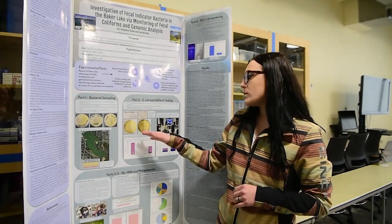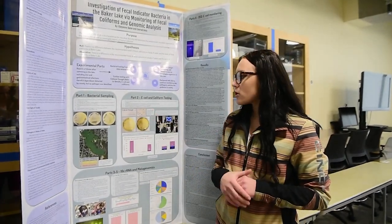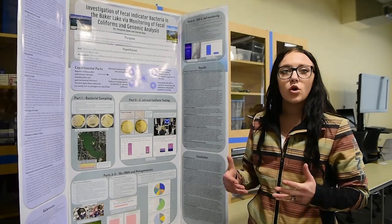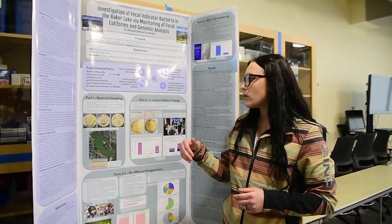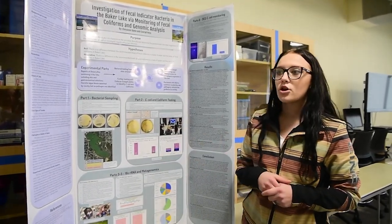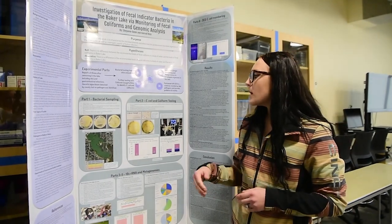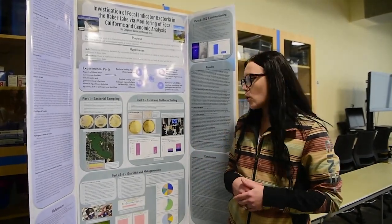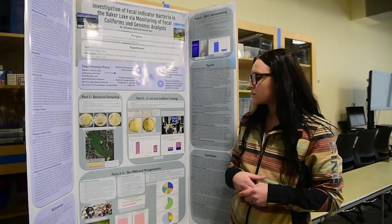Here are a couple of our pictures. Dark blue and purple indicated E. coli, while pink and red indicated other coliforms. Teal and green would show salmonella, but that was the only thing we did not see on our plates.